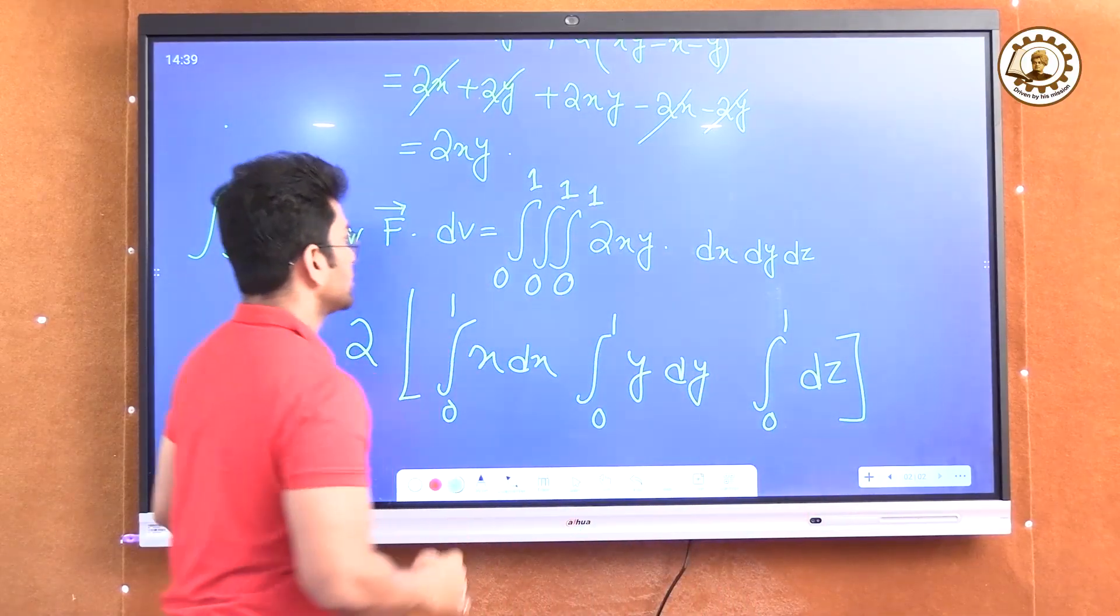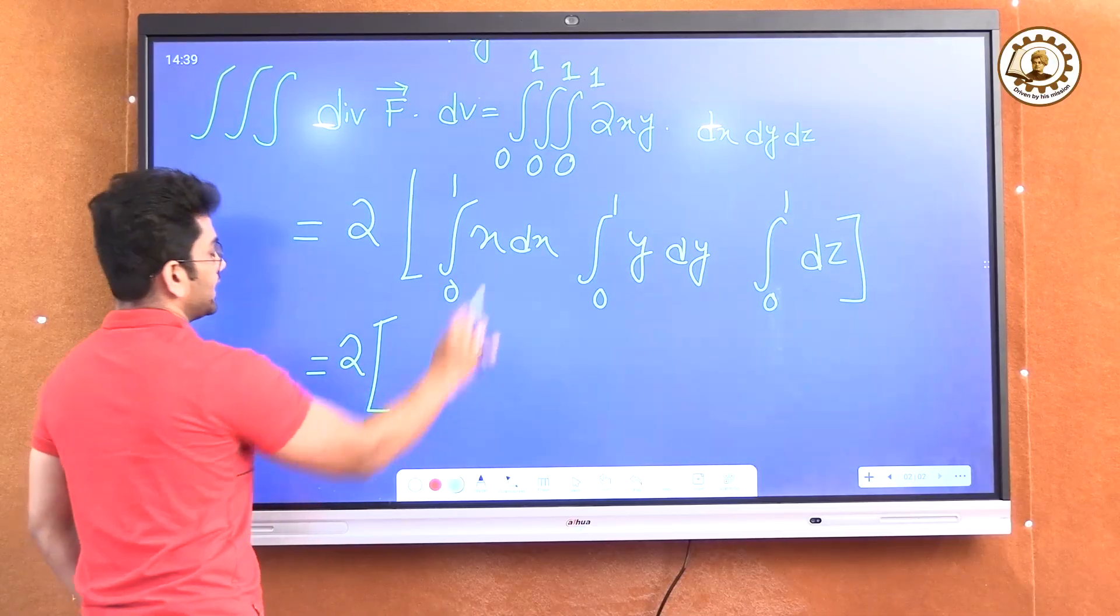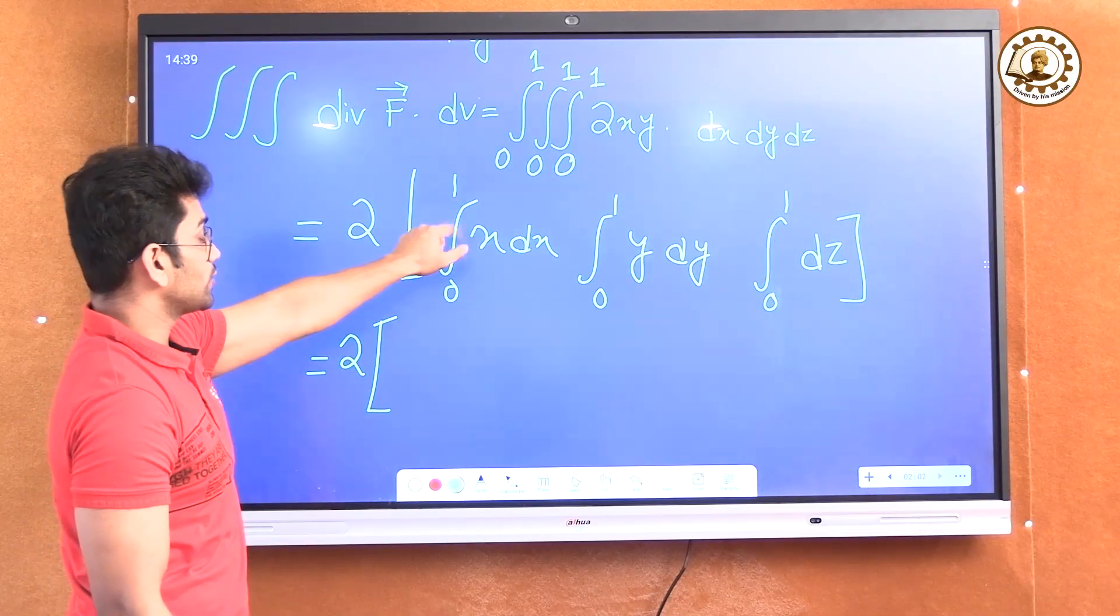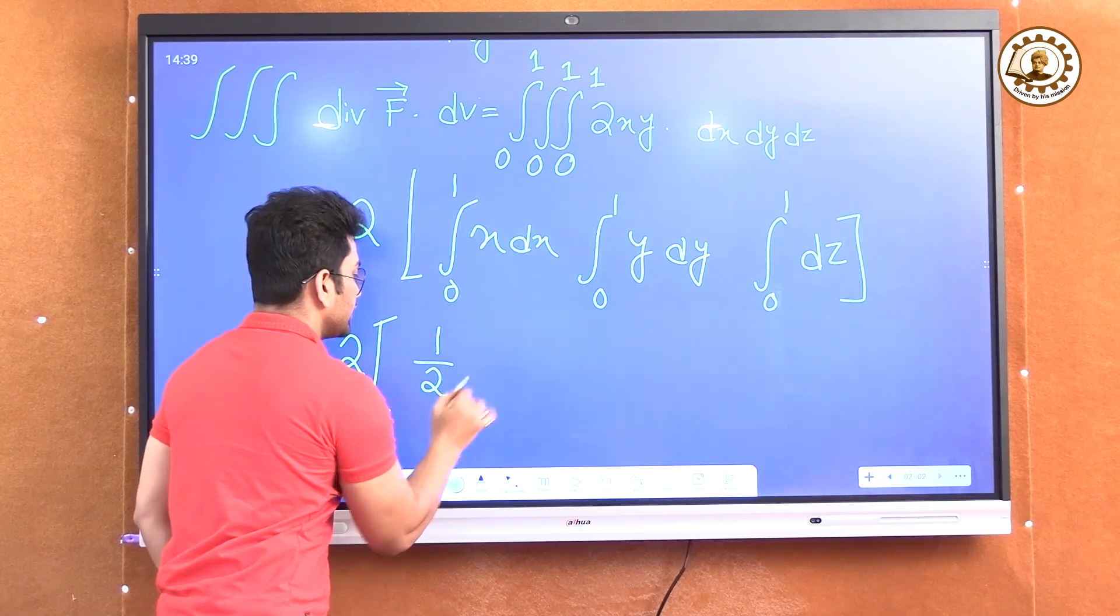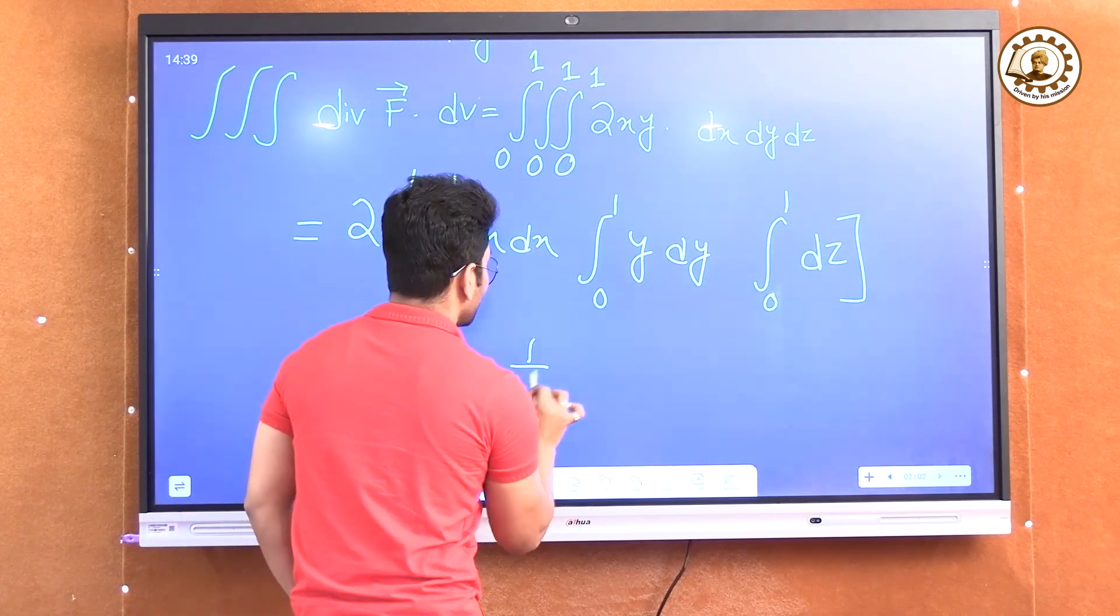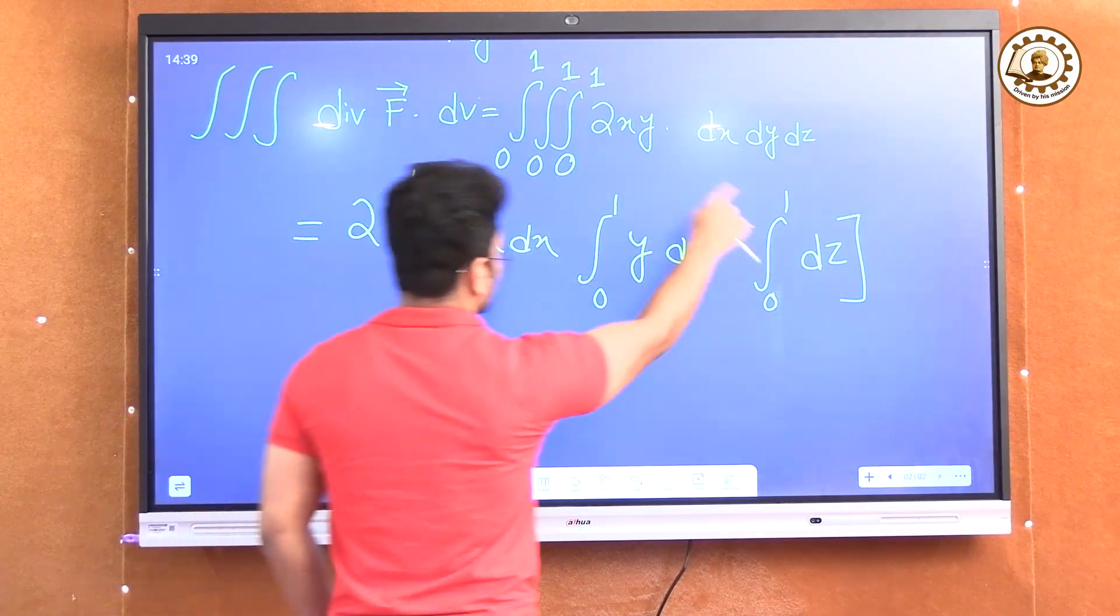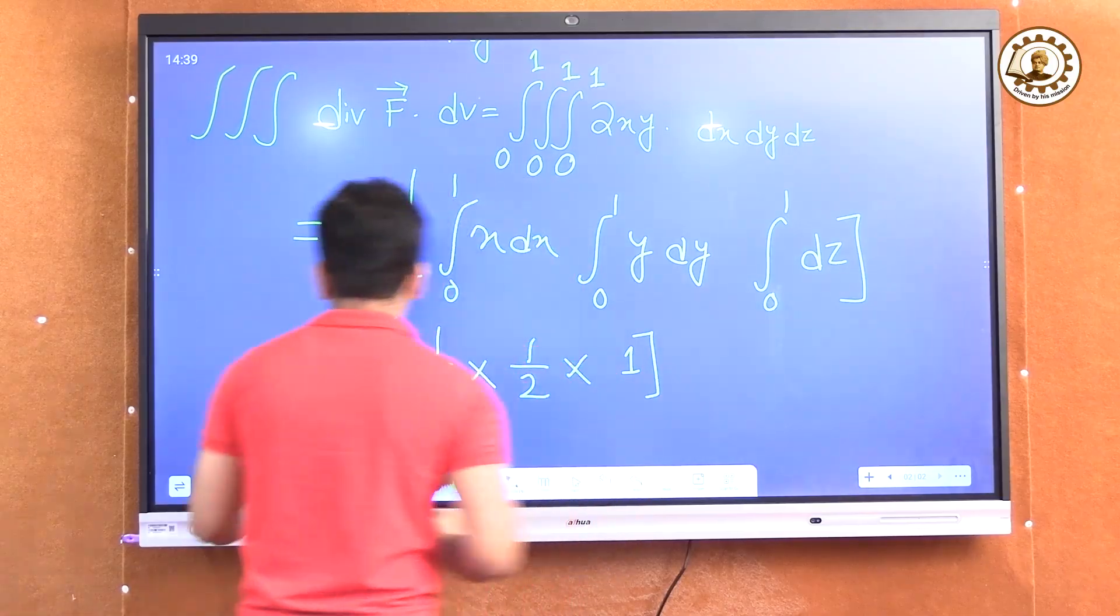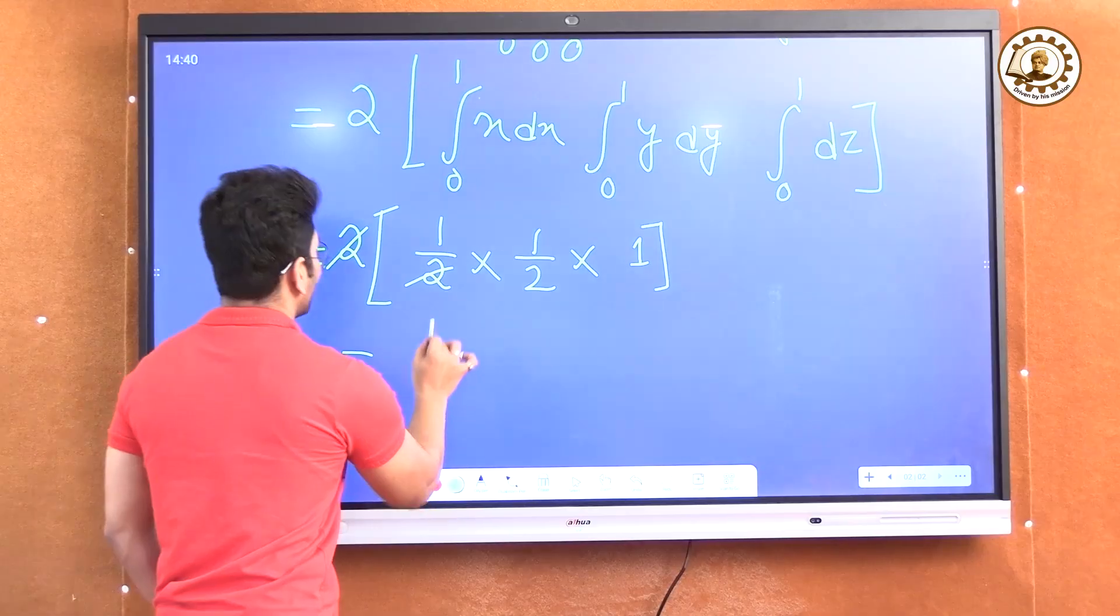So it will be 2 into the integration of x dx is x square by 2. If I put the limit 1, it will be half. Here it is again half and here integration of dz is z and if I put the limit, it will be 1. So the integral becomes 2, 2 is cancelled. So it is half.